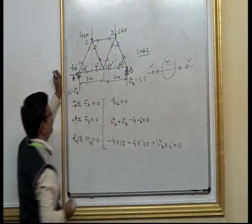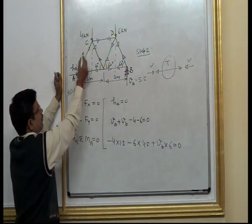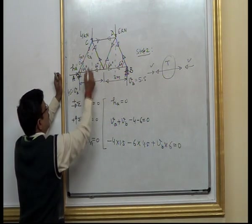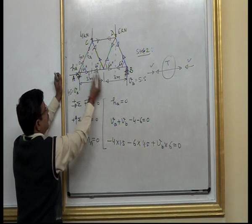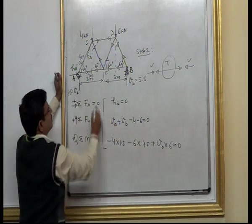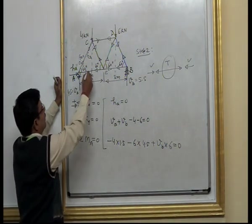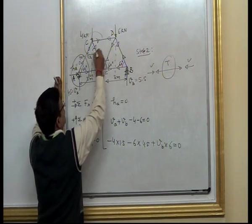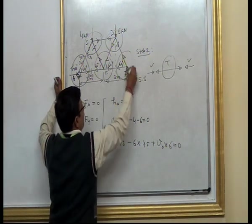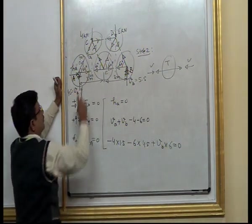We assume tensile force and assign nomenclature to these forces. The arrowhead at A due to member AC is known as FAC, while the force at C due to member CA is FCA. Similarly, the force at A due to E is FAE. Likewise, we note down all the forces. In method of joints, step 3 is to make free body diagrams of all the joints, giving us FBDs of different joints.